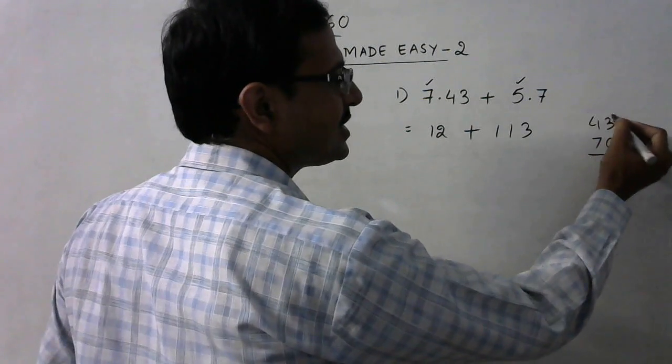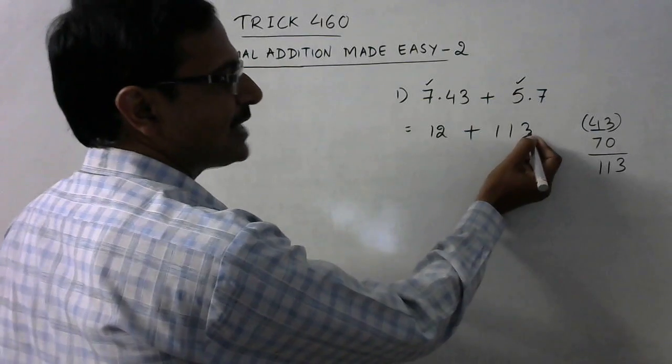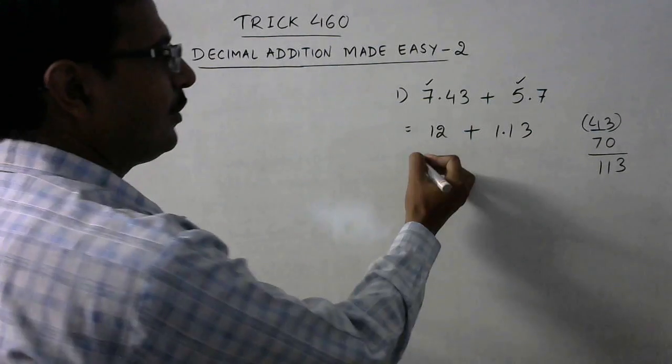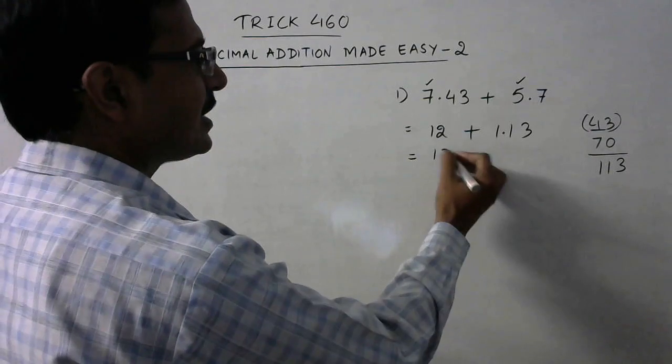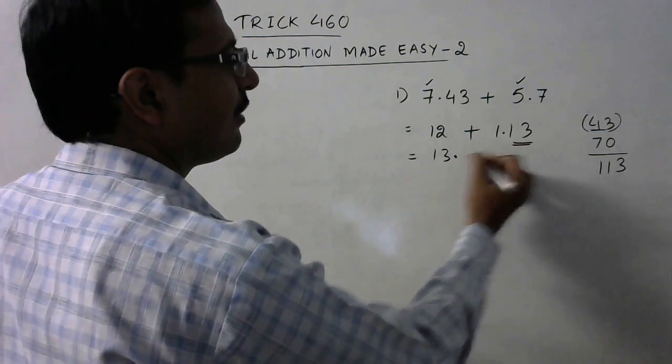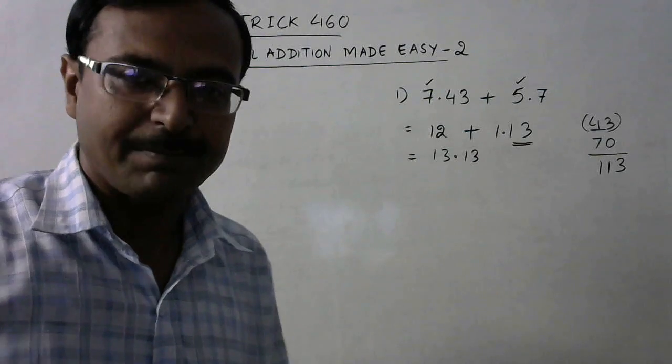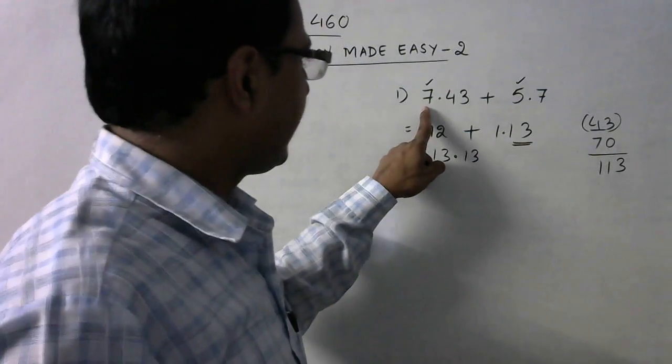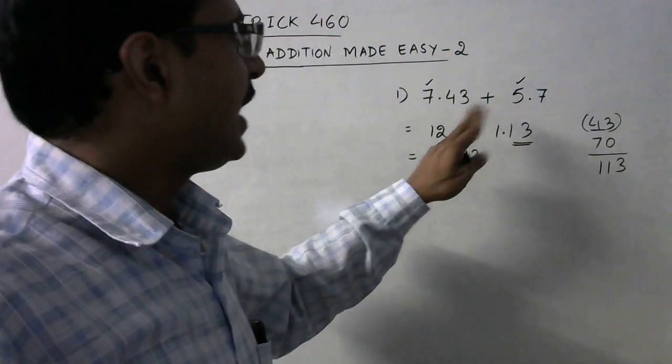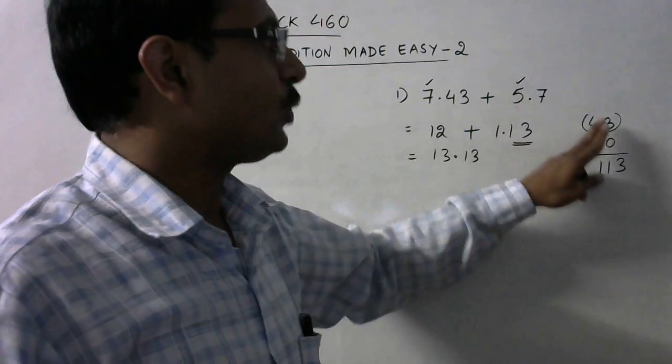So write 113 here, but since there are two digits here, put a decimal two digits from the right side. Now very easy: 12 plus 1 is 13, and 0.13 will come as it is, so 13.13 is the sum. So all you need to do is add the numbers before the decimal place and after the decimal place, you have to equate the number of digits like this.